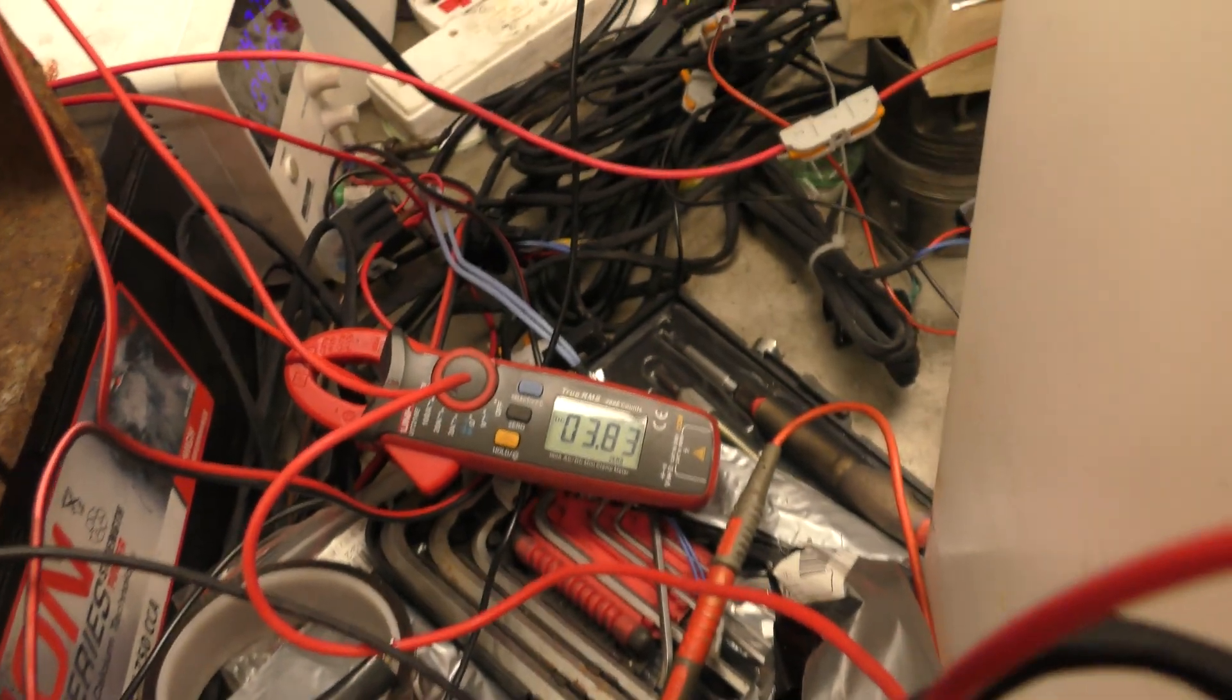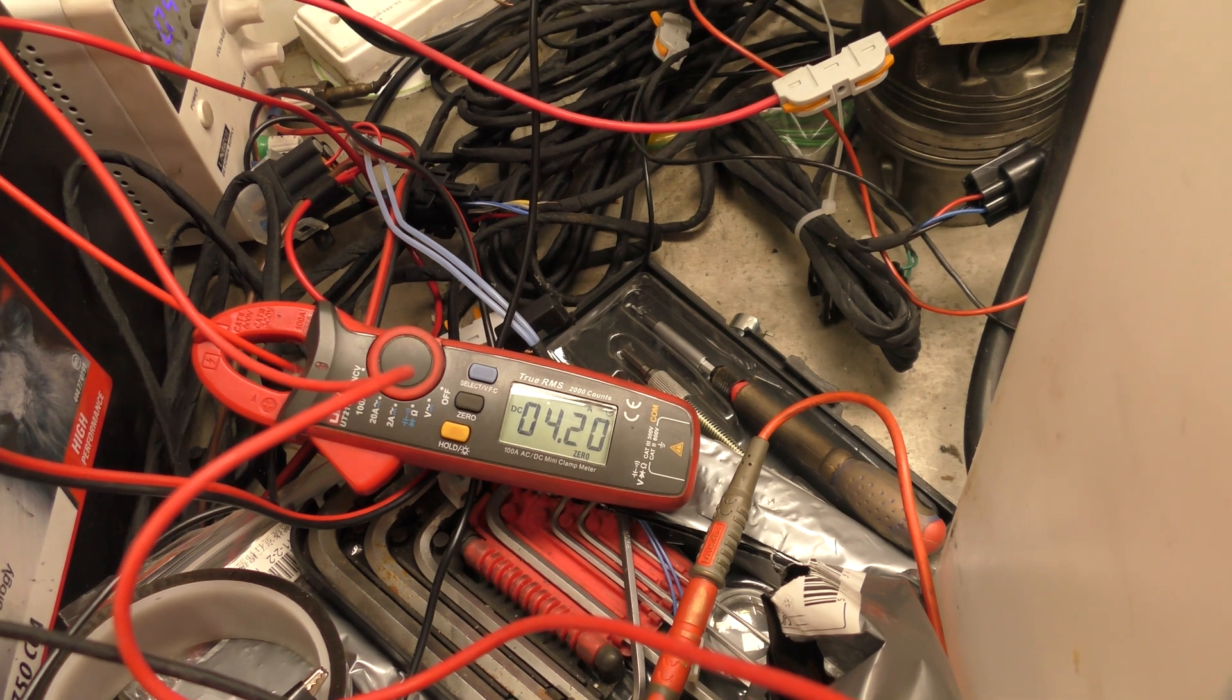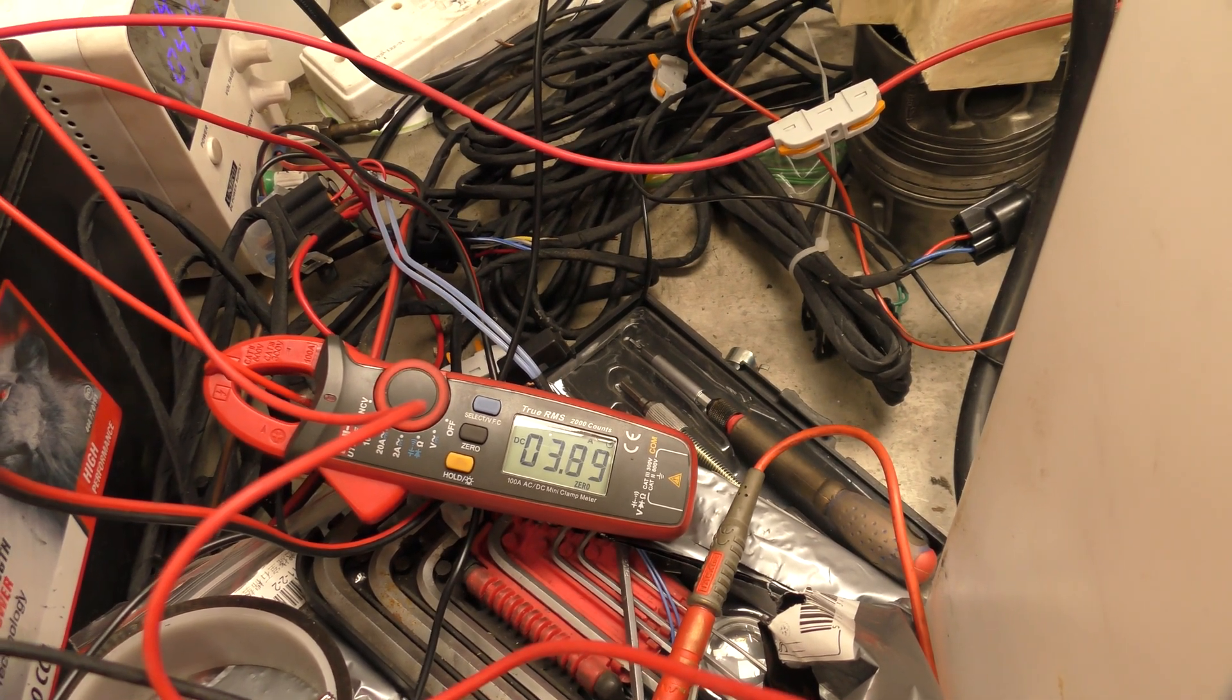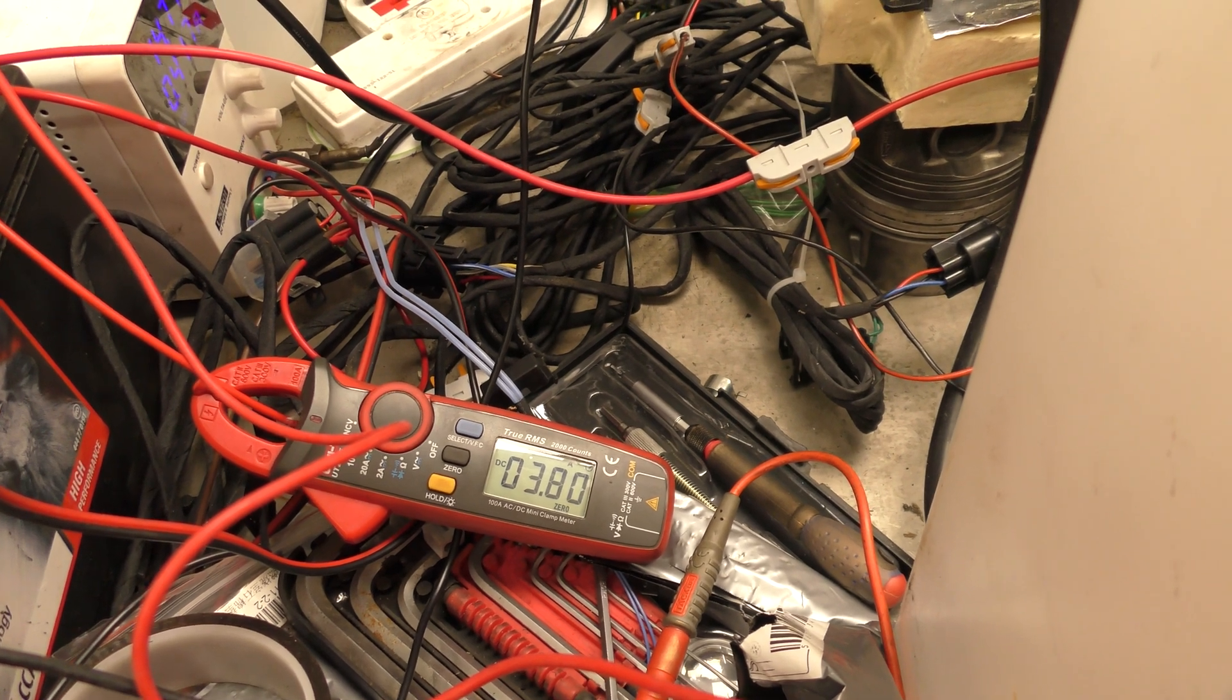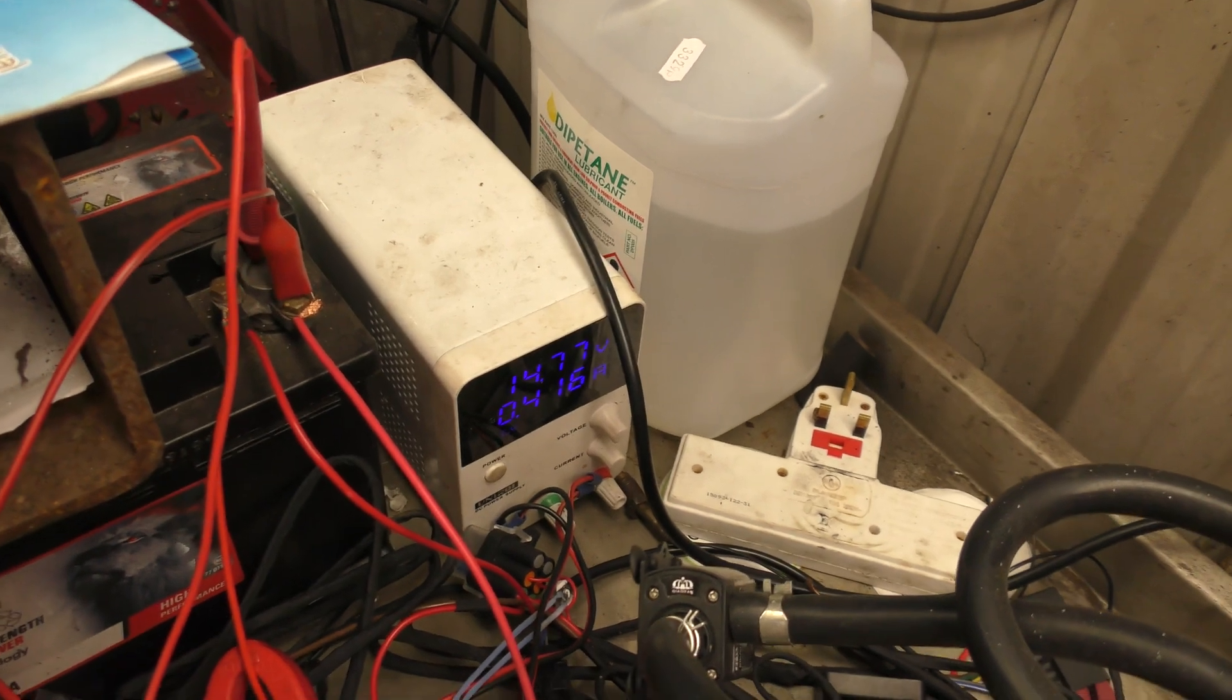And the other clamp meter is what the heater is currently drawing. So just over 4 amps, like 4, we'll call it 4 and then plus another 400 milliamps for the water pump.